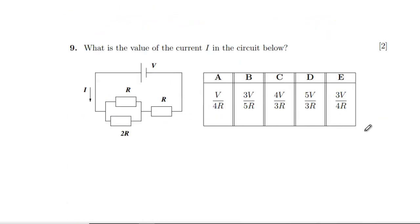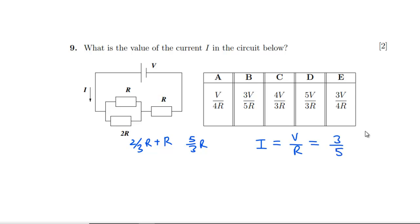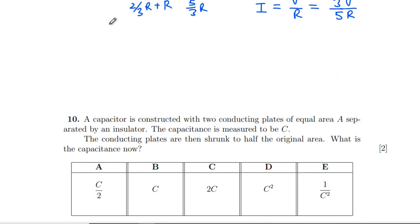Question 9: find the current in the circuit. The total resistance is: two parallel resistors give 2R/3, plus R in series gives a total of 5R/3. Using I = V/R, the current is I = V/(5R/3) = 3V/(5R), which is answer B.